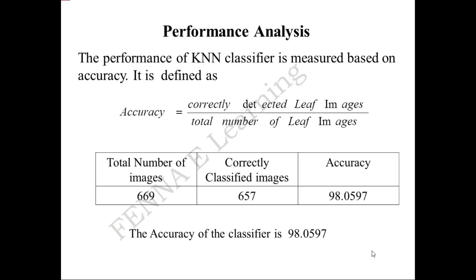Performance analysis of this work is based on accuracy, sensitivity, and specificity. Accuracy is defined as correctly detected leaf images divided by the total number of leaf images. In this project, 669 images were used, and out of these 669 images, 657 images are correctly classified. The total accuracy obtained by this project is 98.0597%.